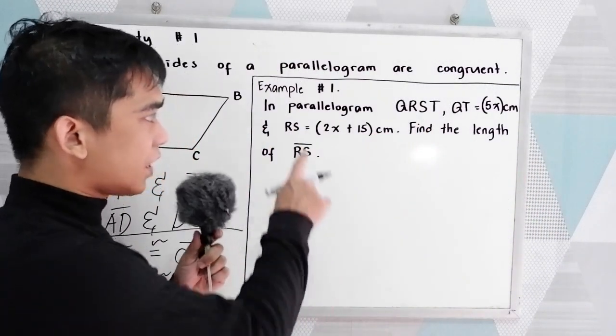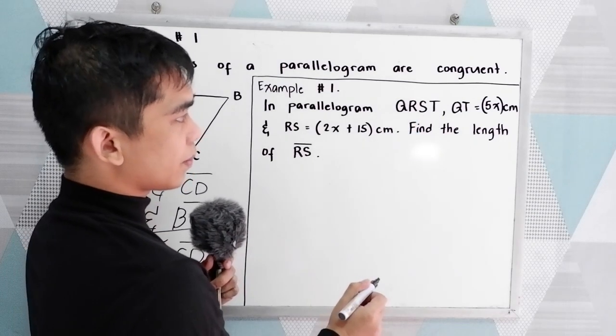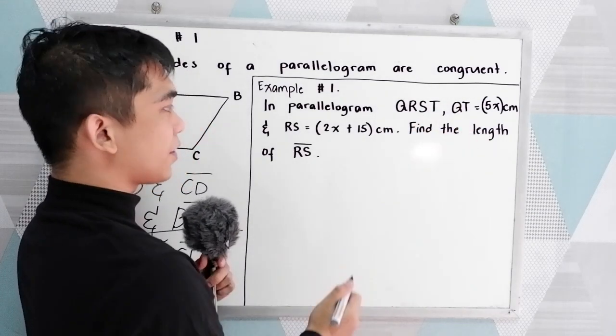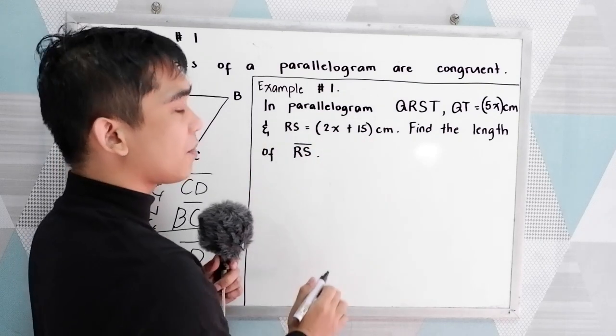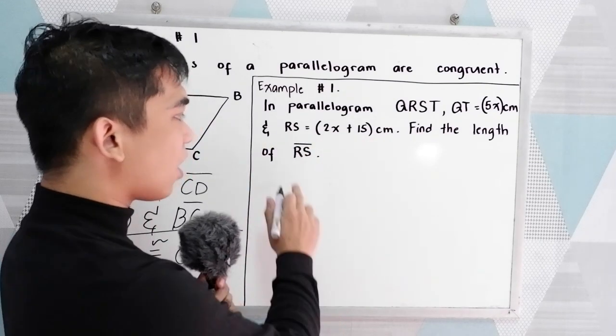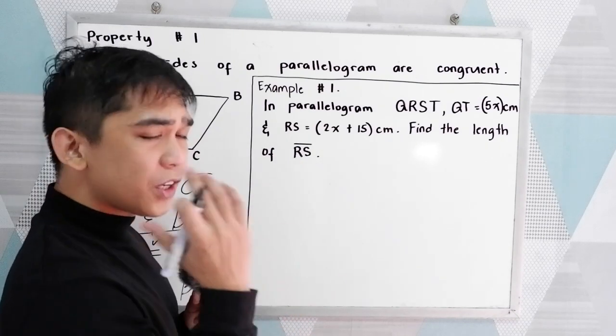Let's say we have in parallelogram QRST, QT is equal to 5x centimeters and RS is equal to 2x plus 15 centimeters. Find the length of RS. Now to visualize, let's illustrate first.